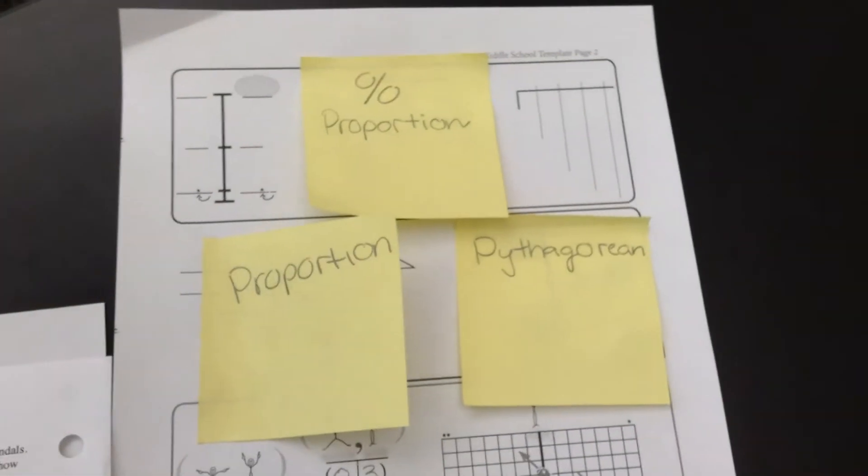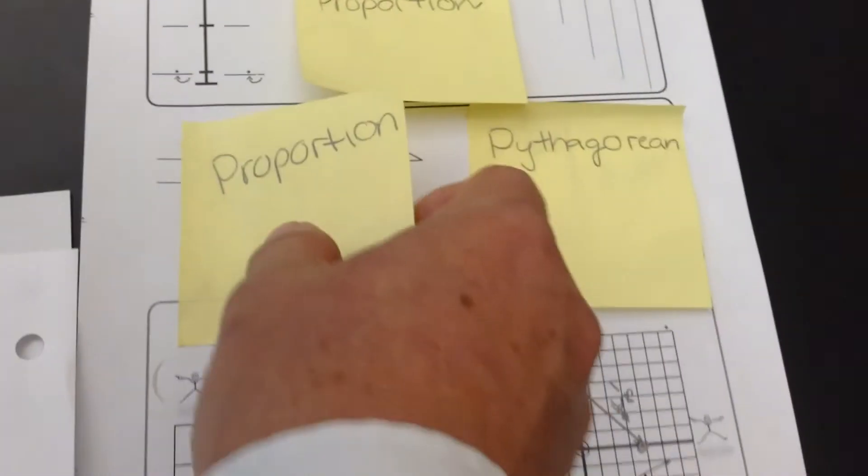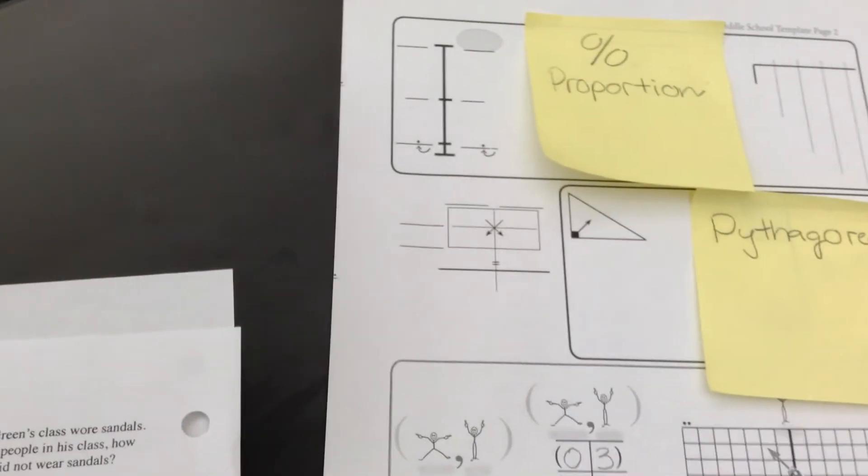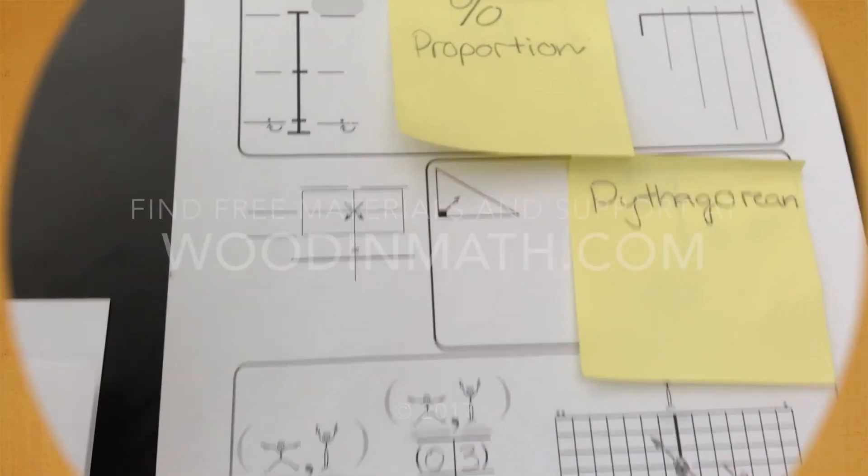You have three more problems. You're going to find the right post-it for that problem. And as you do it, you're going to open up a space to do the problem. So when I take off the proportion problem and put it where it goes, you notice now we open up a space for that problem to be solved.